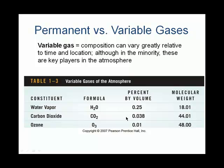Then we have ozone — you've probably heard of ozone in the context of an ozone hole, and we'll talk about that coming up too. Ozone is a molecule, and its formula is O₃, meaning three oxygen atoms all stuck together to make an ozone molecule. So these are all examples of variable gases, which means they vary by location and by time of year.